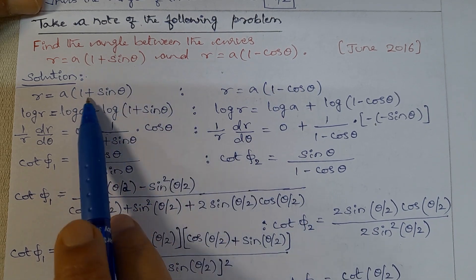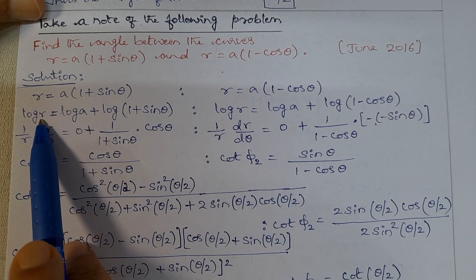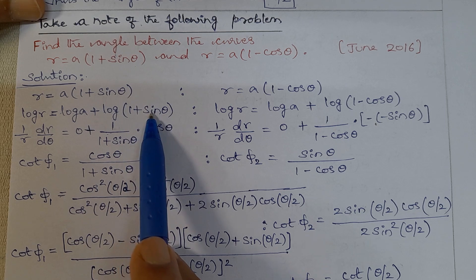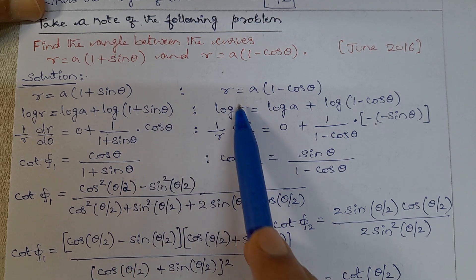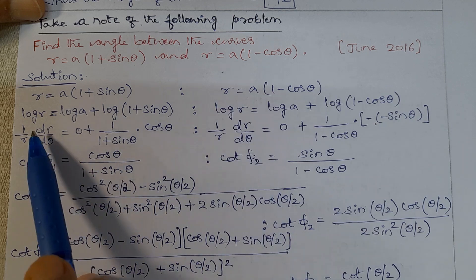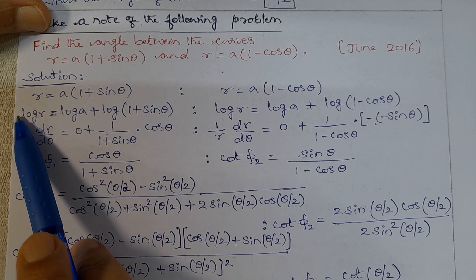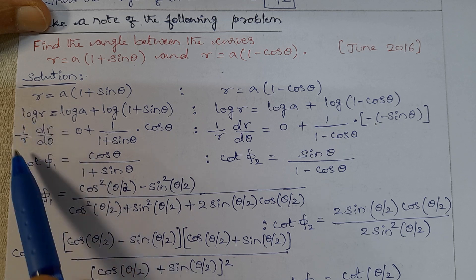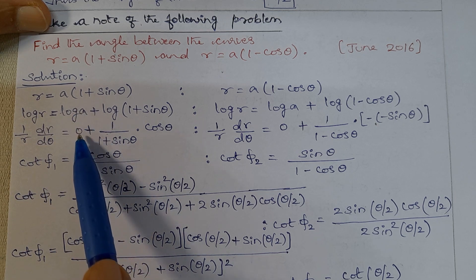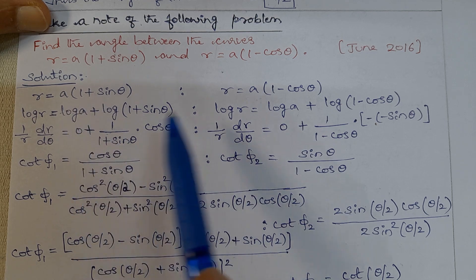Given the equations, apply log: log r equal to log a plus log of (1 plus sin theta), and log r equal to log a plus log of (1 minus cos theta). Then taking differentiation with respect to theta. Differentiating log r with respect to theta gives 1 by r times dr by d theta. Log a is constant, so differentiating log a gives 0.